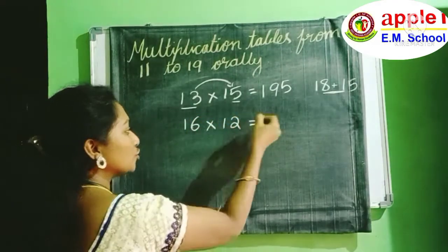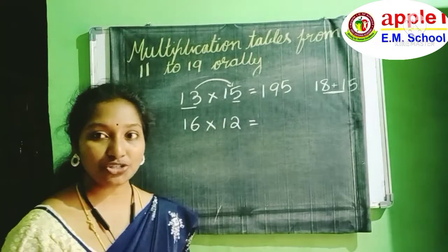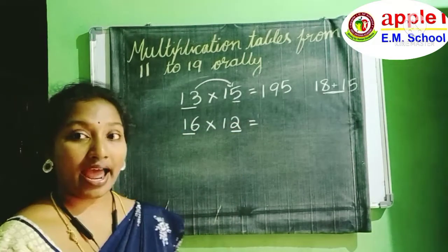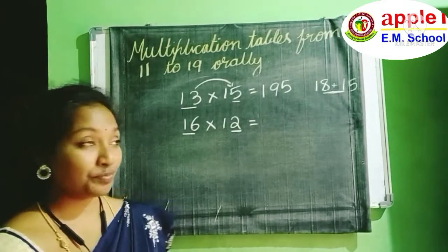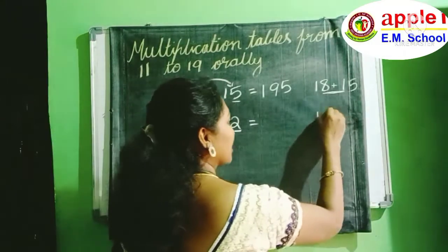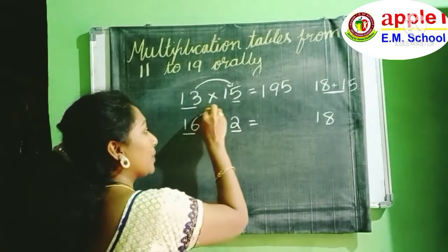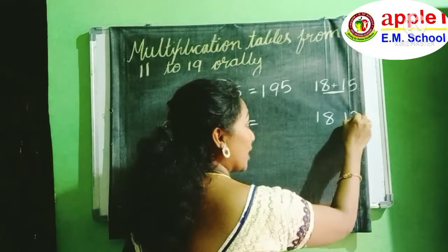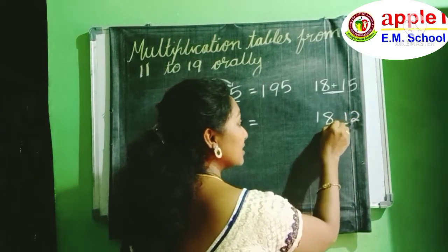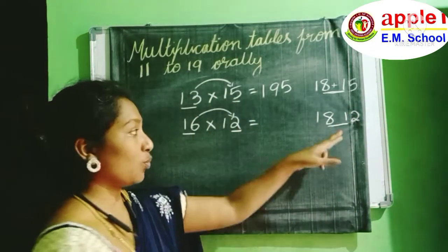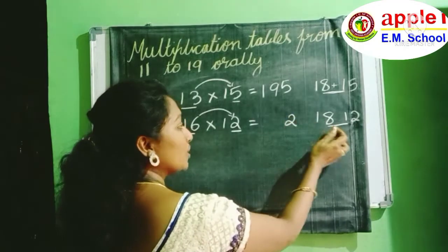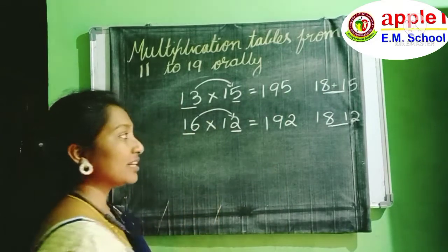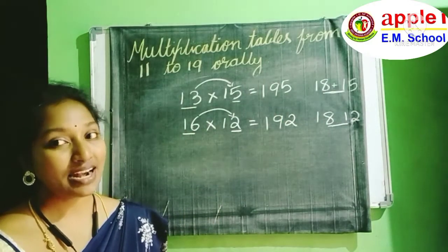Next: 16 into 12. First step, for 16 add 2. 16 plus 2 is 18. Next, multiply the ones place digits: 6 into 2 is 12. Add the middle two numbers — ones place is 2, tens place is 8 plus 1 which is 9. So the answer is 192.